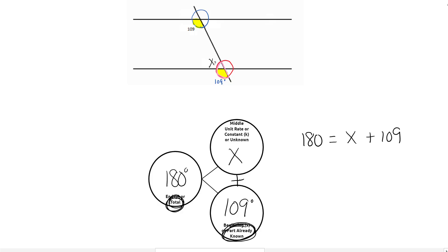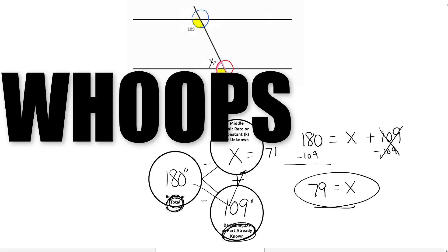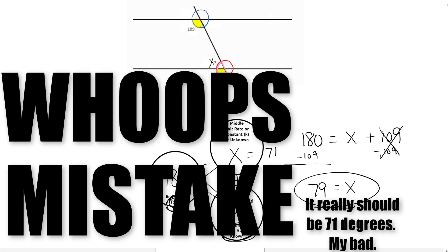Now, with number bonds, we know the opposite of adding is subtraction. And so we would end up getting x by subtracting 109 from 180. And that's going to give us 71 degrees. Now, how do we do that algebraically? Well, here's a one step equation. I'm going to subtract 109 on both sides of the equation. So this cancels out. And when I subtract 109 from 180, I still get my answer of 79 degrees. So number bonds helping us solve equations.